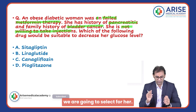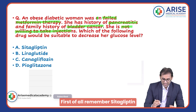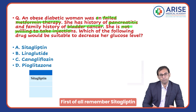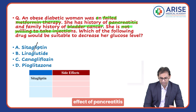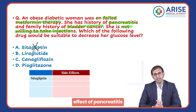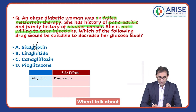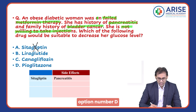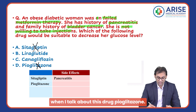First of all, remember cetagliptin — all types of gliptins will have the side effect of pancreatitis, so option A is gone. When I talk about option D, pioglitazone, this drug is given with a black box warning.